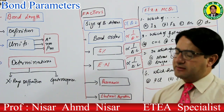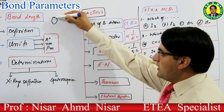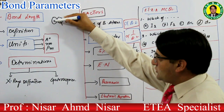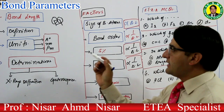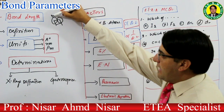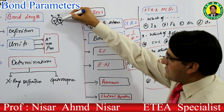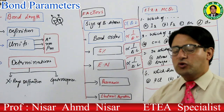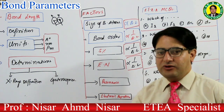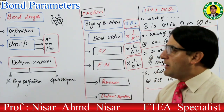Bond length کیا ہوتی ہے — bond length کو ہم define کر سکتے ہیں: دو covalently bonded atoms کے nuclei کے درمیان جو distance ہوتا ہے، اس کو bond length کہتے ہیں۔ یعنی distance between the nuclei of two covalently bonded atoms۔